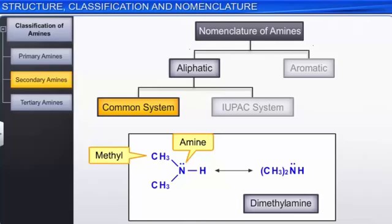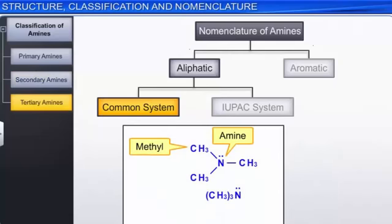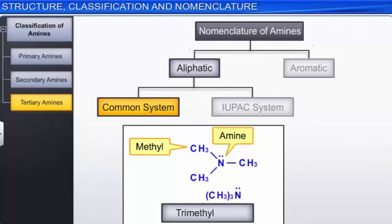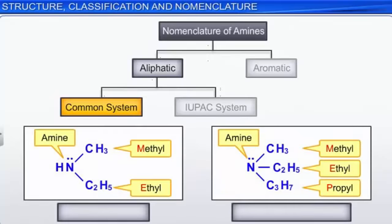In tertiary amines, if the three alkyl groups are the same, then the prefix tri- is added before the name of the alkyl group. Hence, the given compound is named trimethyl amine. In case of mixed amines, the names of the alkyl groups are written in alphabetical order. For example, the given compounds are named as ethyl-methyl amine and ethyl-methyl-propyl amine respectively.